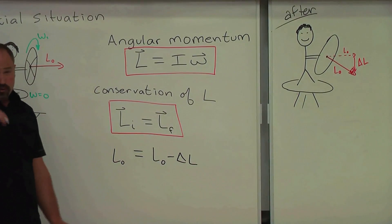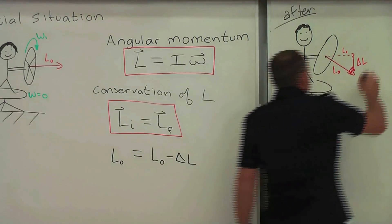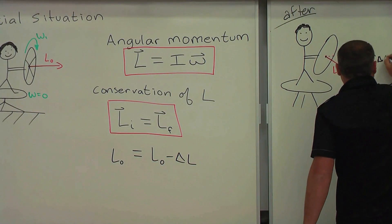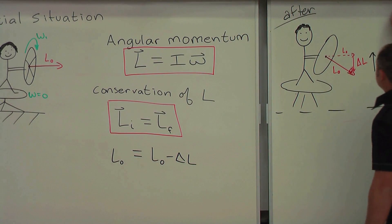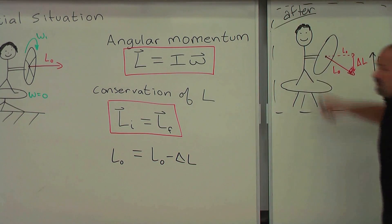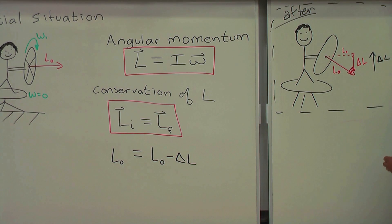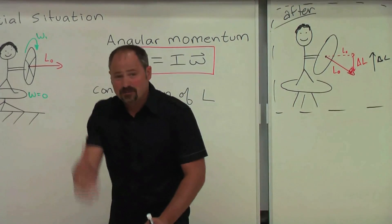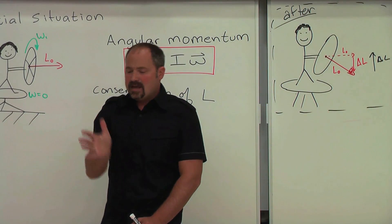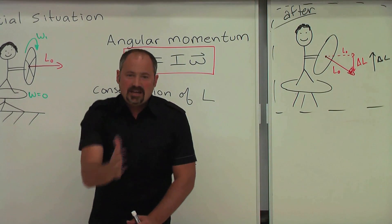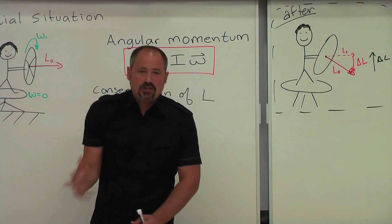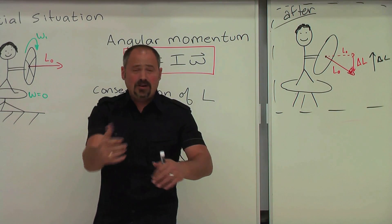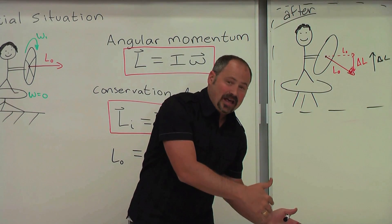In order to conserve momentum, we need a positive delta L in our system. And remember, our system is both me and the platform. Well, that's exactly what we got, because positive delta L means up this way, and therefore angular velocity in this direction. So sure enough, when I went down, I spun to the left.